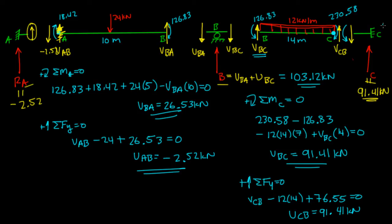And here at the reaction, if that moment is going that way, that means the reaction moment at C is going to go this way. And this is equal to 230.58. Same thing at A. We have this 18.42 moment going clockwise. That means at A, it's going to be equal and opposite, going counterclockwise. That means the reaction moment at A is going clockwise. And that's 18.42.